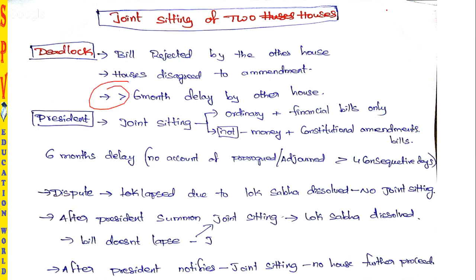This can happen in any house. If a bill is introduced in Rajya Sabha and sent to Lok Sabha, and Lok Sabha suggests amendments but Rajya Sabha doesn't accept anything, that is also a deadlock.